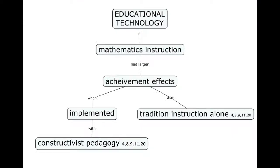Another theme that emerged from analyzing the literature was that educational technology in mathematics instruction is more effective in enhancing student achievement when it is combined with pedagogy. Educational technology is significantly more effective in increasing student achievement in certain types of learning environments, and each use of educational technology needs a pedagogical approach to improve student achievement. In environments where educators used a constructive method of teaching, educational technology had a larger effect on student achievement than environments where teachers used a traditional approach.